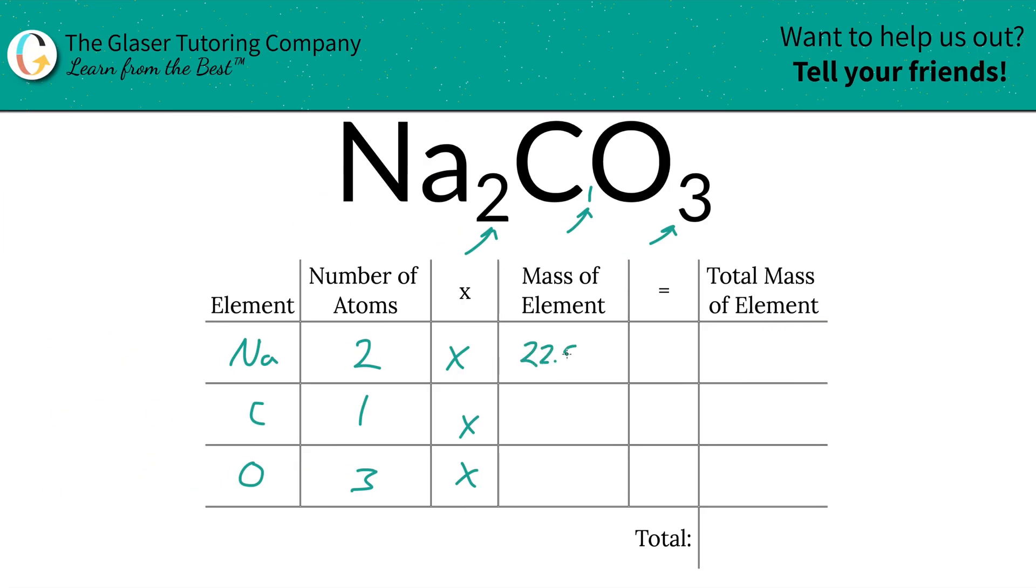So that's what we're going to write in. 22.99 for sodium, carbon is 12.01 and oxygen was 16.